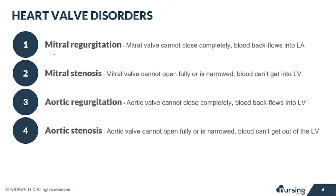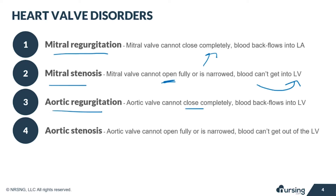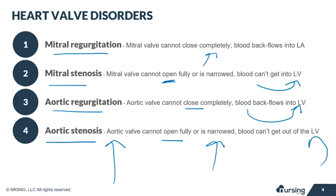Mitral regurgitation occurs when the mitral valve cannot close completely and blood flows into the left atrium. Mitral stenosis is when the mitral valve cannot open fully or is narrowed and blood cannot get into the left ventricle. Aortic regurgitation is when the aortic valve cannot close completely and blood back-flows into the left ventricle. Aortic stenosis is when the aortic valve cannot open fully or is narrowed and blood can't get out of the left ventricle.